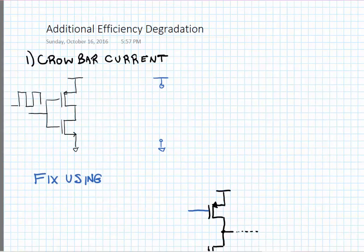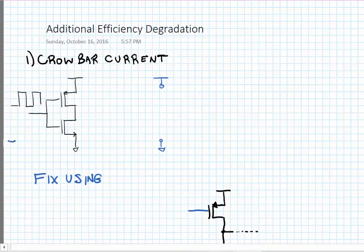Now there are a few other considerations that we have to take into account when we're talking about efficiency degradation. The first is crowbar current. Ideally we're hard switching the input of these transistors, but in reality we don't have perfectly infinite strength driving edges. So the square wave that we're trying to drive this with becomes more like a trapezoidal wave.